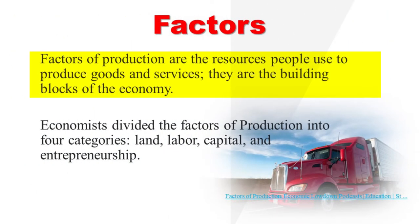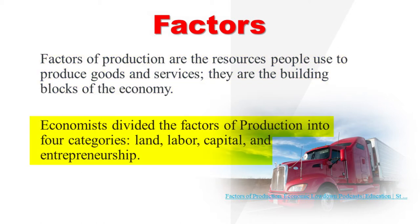Factors of production are the resources people use to produce goods and services. They are the building blocks of the economy. Economists divide the factors of production into four distinct categories. These categories are land, labor, capital, and entrepreneurship.